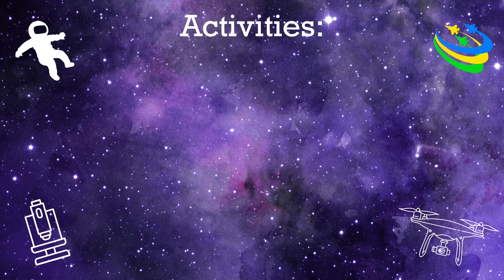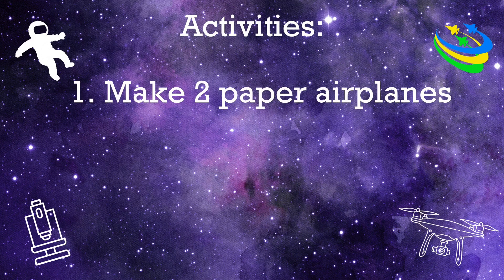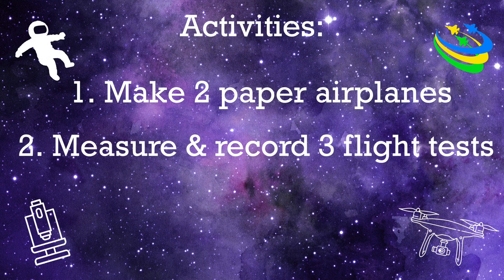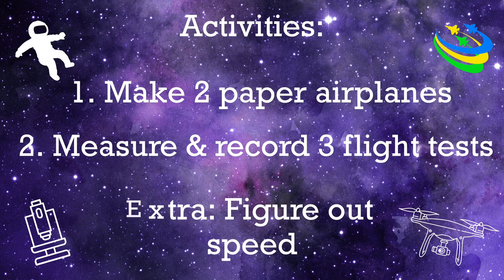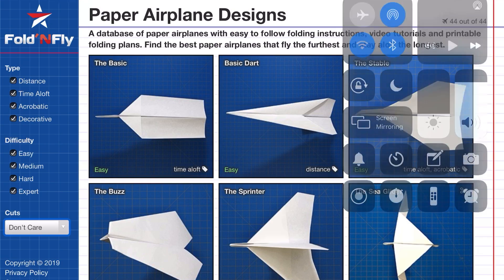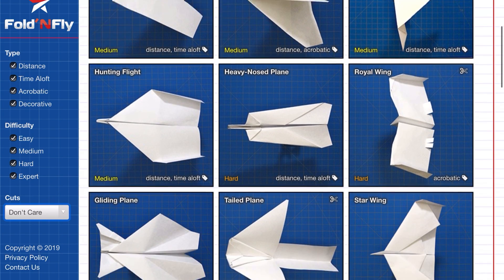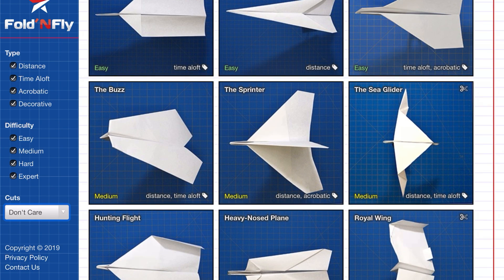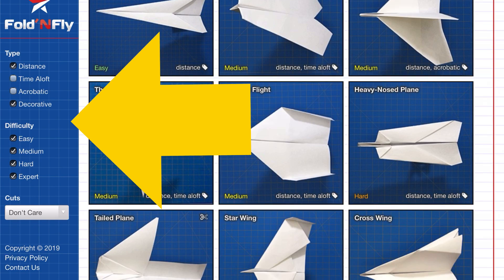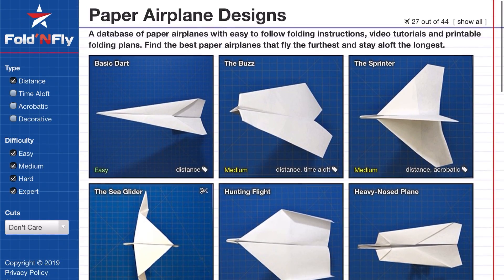So we've got some activities. Number one: you're going to make two paper airplanes. Number two: we're going to measure and record some test flights, so you'll throw the paper airplane and see how far it goes. For extra credit, we're using a website called Fold and Fly — I'll put it in my YouTube notes and on Google Classroom. It shows you pictures of paper airplanes, and you can narrow that down by planes that go far or planes that are easy to make.